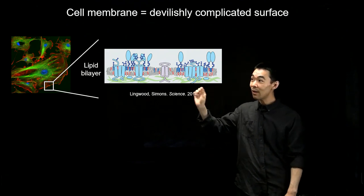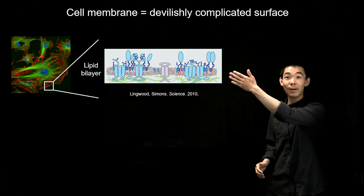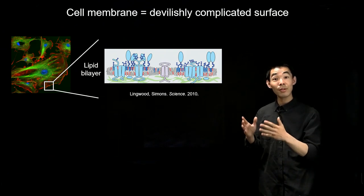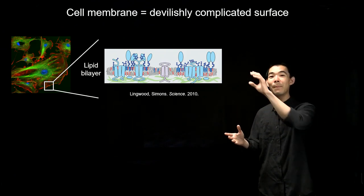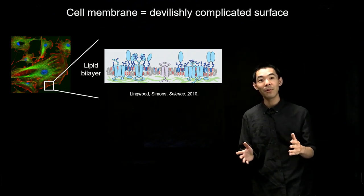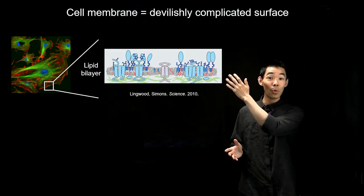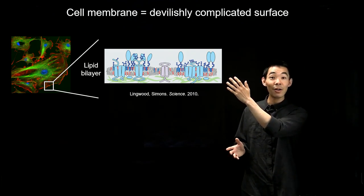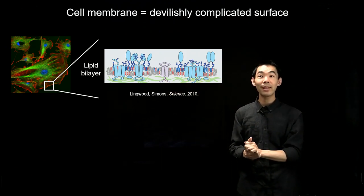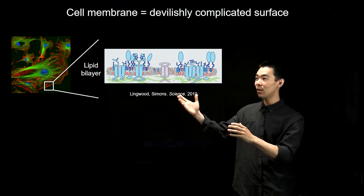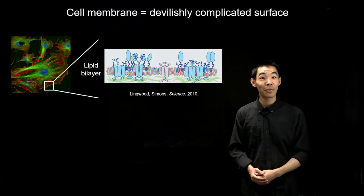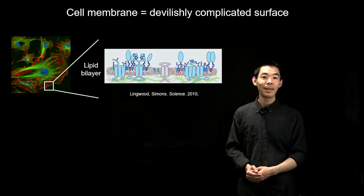This thin barrier is made up of a lipid bilayer. In addition to the bilayer, there are proteins, sugars, and other macromolecules embedded within it. It is well known that the spatial and temporal organization of these species along the interface plays a key role in how cells interact with the surrounding fluid, other cells, and the external world.